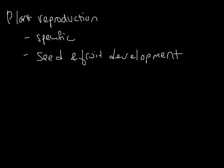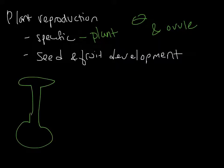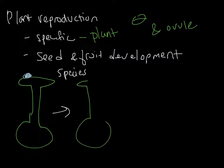Now that we've reviewed plant structures, let's talk about plant reproduction. Plant reproduction is specific in that it can only happen with that one plant — specifically involving the pollen tube and the ovule. That symbol represents pollen. Pollen lands on top of the ovule, but the pollen tube will only form if it is the same species. If it is the same species, a pollen tube forms — a long, skinny tube, exactly as it sounds.